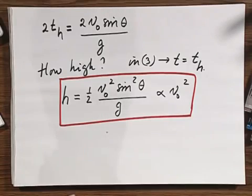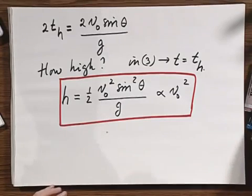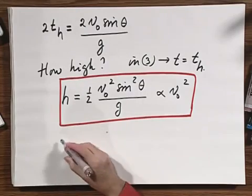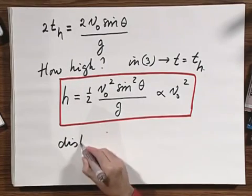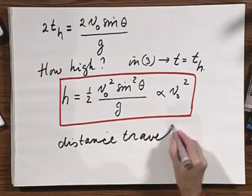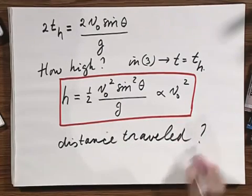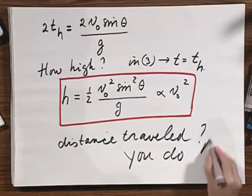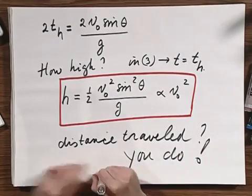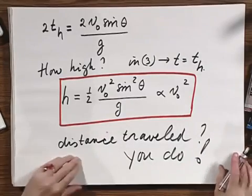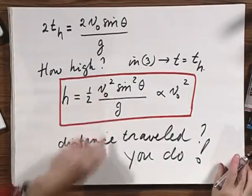Then there is one question left, and that's the one I would like you to deal with, and that is the distance traveled. That is the horizontal distance traveled. And I think you should do that. So when we double v zero, how much further does it land in the x direction when v zero is doubled?